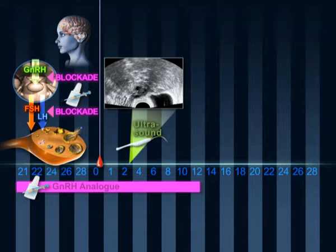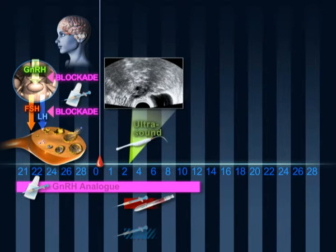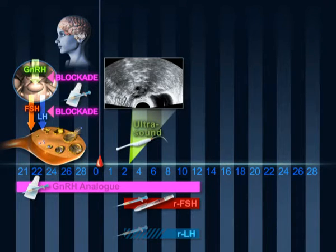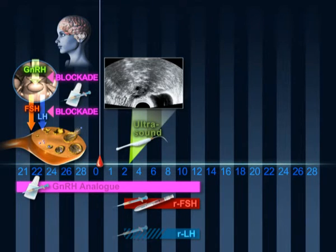If everything is normal, subcutaneous daily injections of FSH are initiated. This hormone facilitates the growth of the follicles in the ovary. The dosage is established for each patient and is adjusted in consecutive checks. The objective is to have 4-7 follicles grow per ovary.